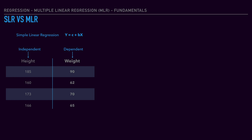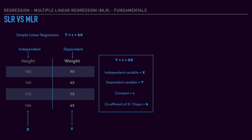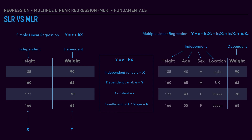Let's have a quick look at the dataset below. We have height as the independent variable and weight as the dependent variable, y. We have y equal to c plus b of x, where x is the independent data, y is the dependent variable, c is the constant, and b is the slope. Now let's see a dataset for multiple linear regression. In this dataset, we have multiple independent variables: height, age, sex, and location.